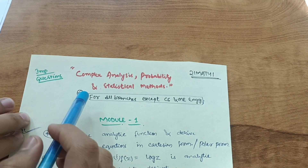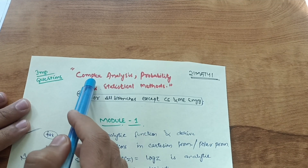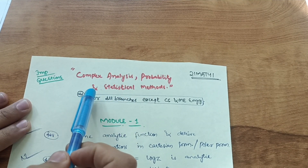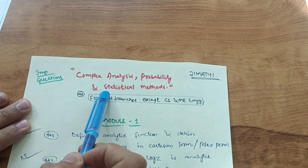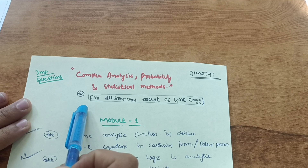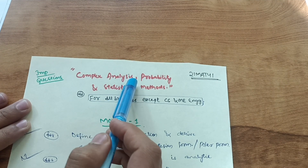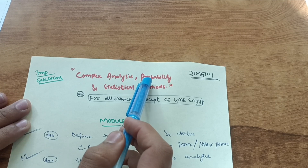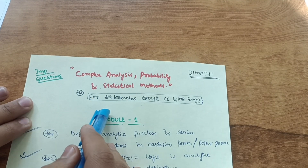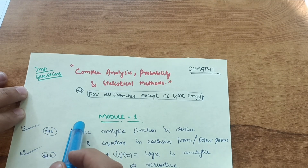Hello everyone, welcome back to my channel. Today I have another passing strategy video for Complex Analysis, Probability and Statistical Methods, which is the fourth semester maths — course code 221MAT41 — for the CS and Mechanical branches. I have already uploaded videos for other branches; links will be in the description. Let me discuss the most important questions which will definitely appear in the examination.